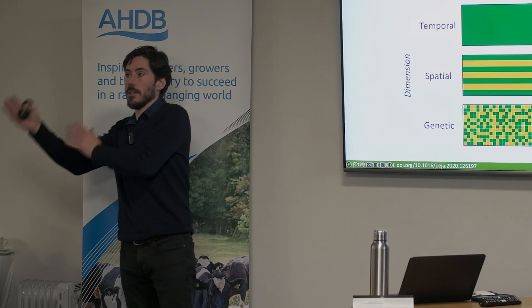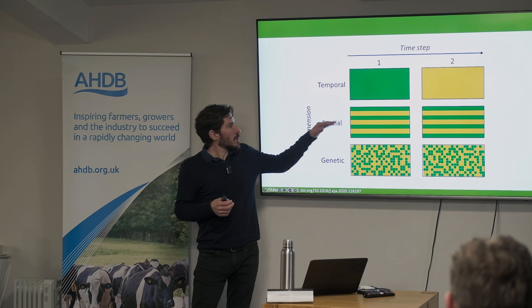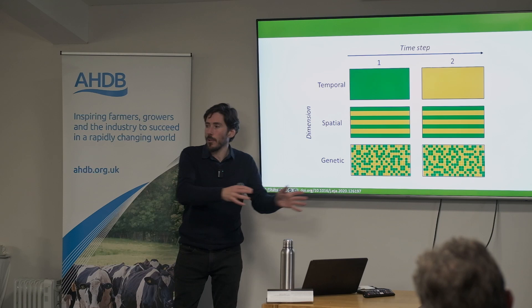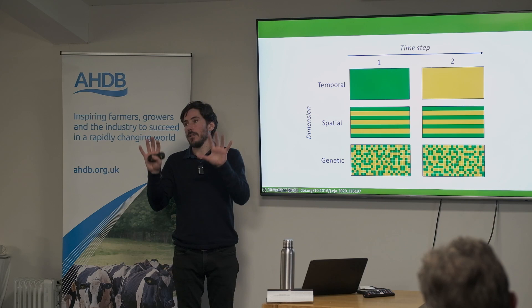The second dimension is spatial — physically separating plants. It could be alternate rows of an intercrop, such as pea-cereal alternating, or strips of six metres of one and three metres of another, alternating. The point is you're spatially separating out the plants to create diversity through space.